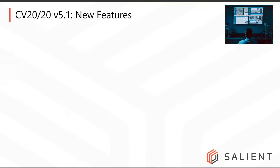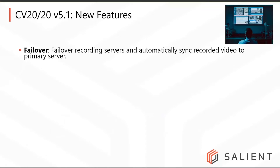The new features in Symmetry CompleteView 5.1 are divided into two sections: the big features and some additional features. For the big features, we've added a failover capability. This allows you to failover recording servers in CompleteView 5.1. You can assign a dedicated failover server to one or many primary recording servers. If any of them has an issue, it will be automatically detected by the management server, which will initiate a failover sequence.